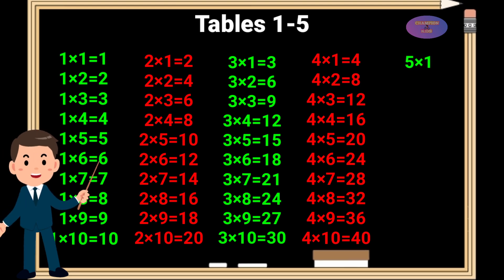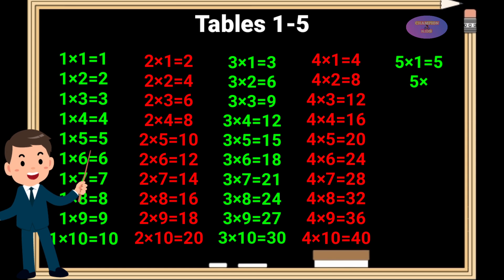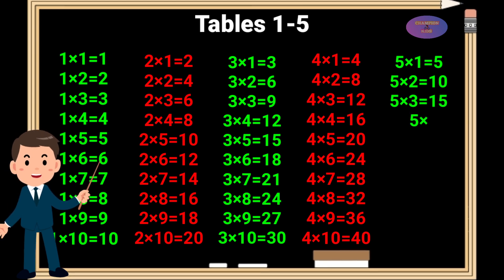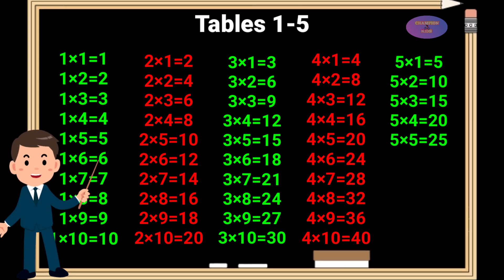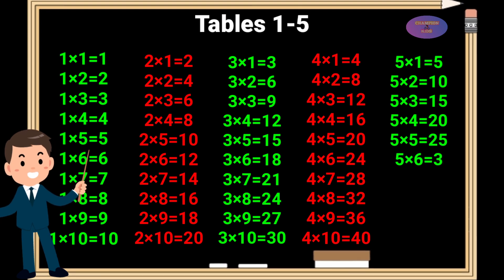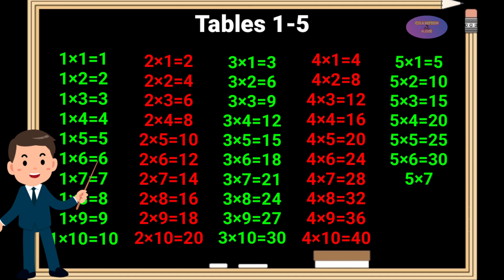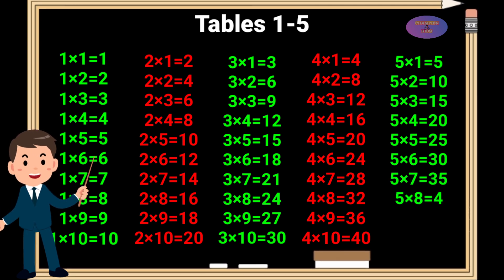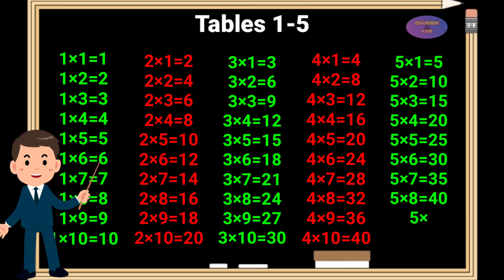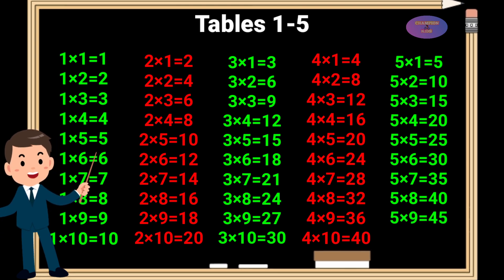5 times 1 is 5, 5 times 2 is 10, 5 times 3 is 15, 5 times 4 is 20, 5 times 5 is 25, 5 times 6 is 30, 5 times 7 is 35, 5 times 8 is 40, 5 times 9 is 45, 5 times 10 is 50.